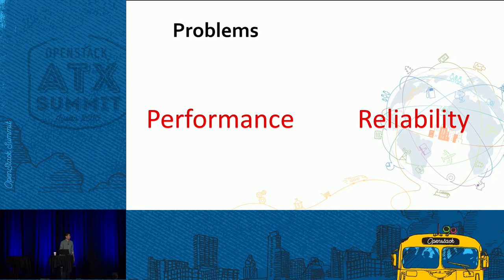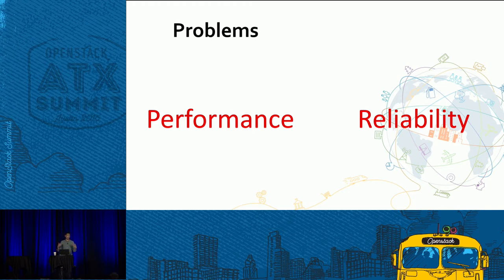The main topics I'll highlight today revolve around performance and reliability. There are different deployment models you can leverage when deploying RabbitMQ, and it depends on what your system looks like. In general, the more services you use in OpenStack, everything increases exponentially — more services means more messages, and more messages puts a lot of pressure on RabbitMQ. RabbitMQ often becomes one of the first failure points people run into when deploying OpenStack.